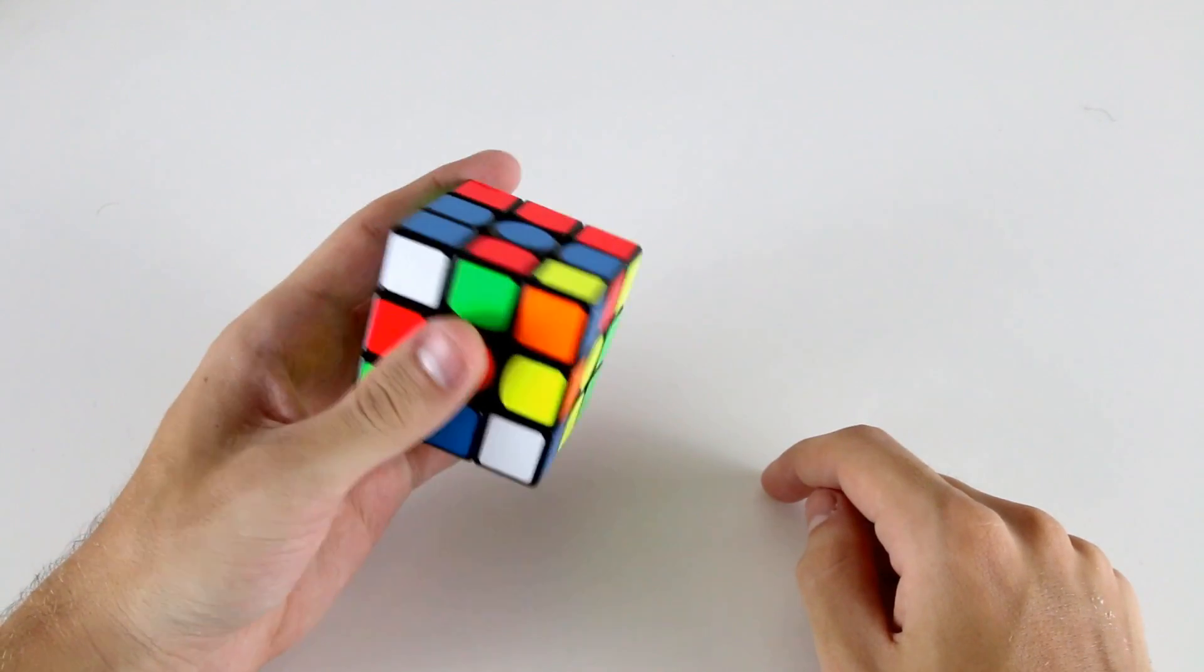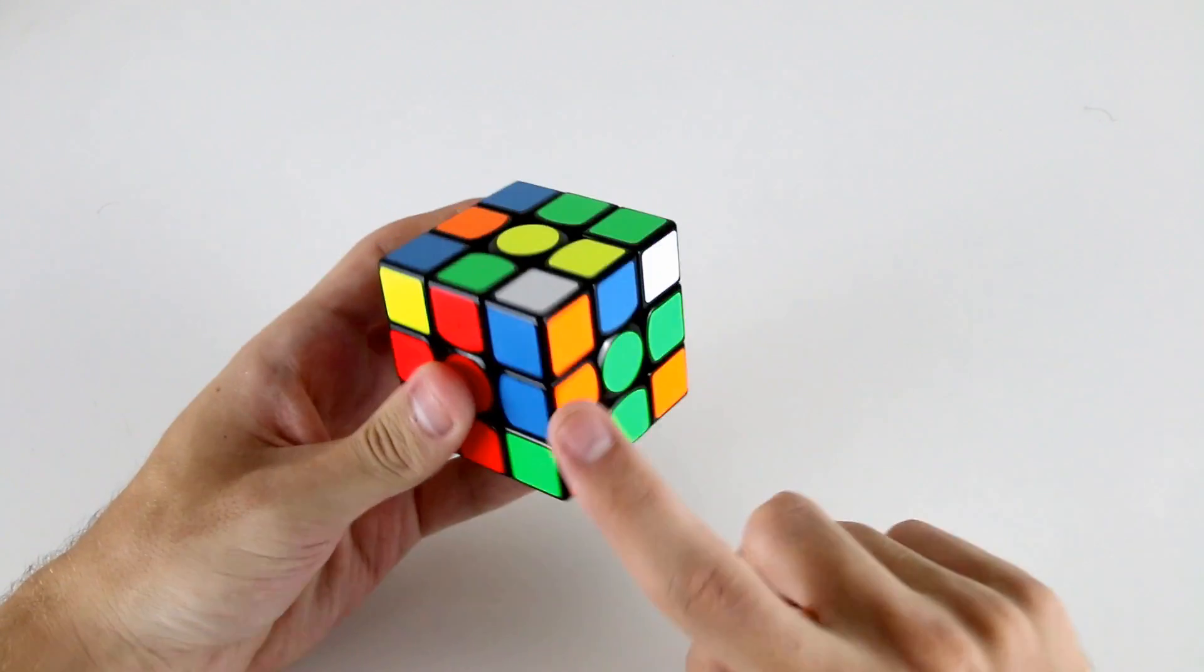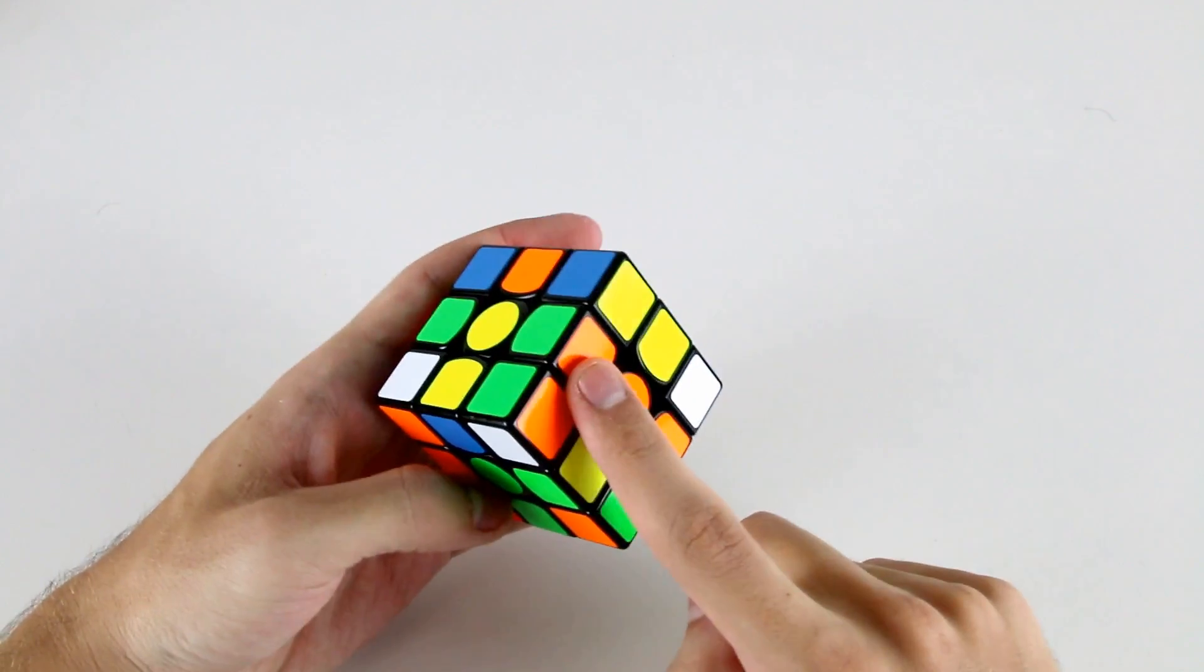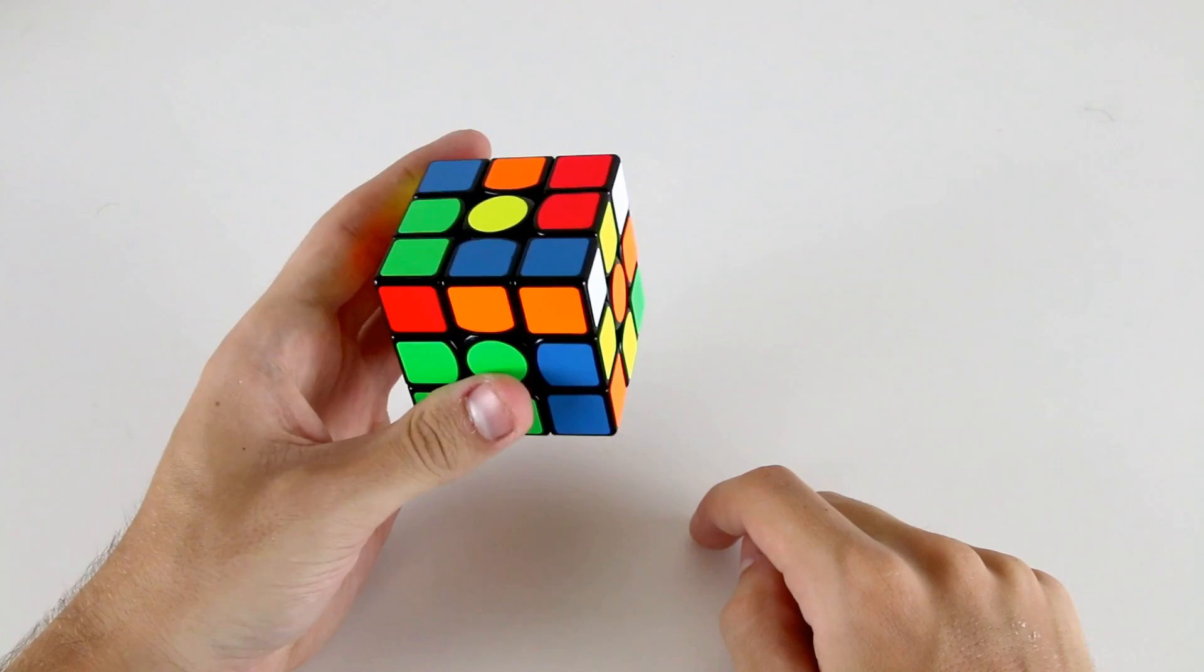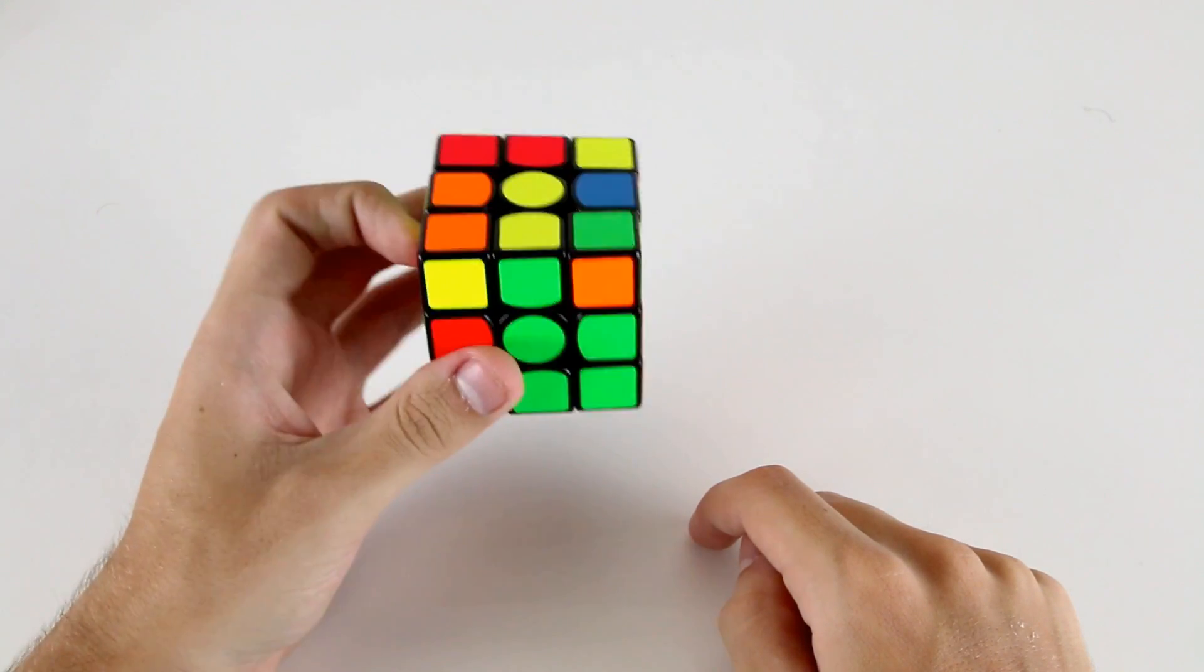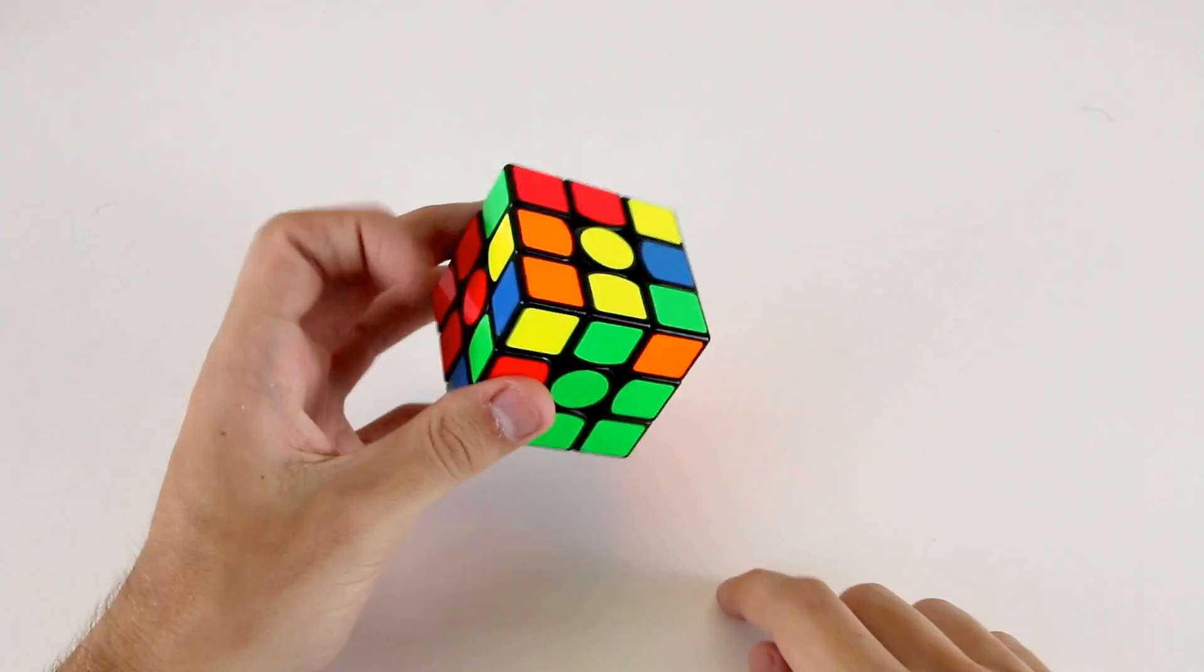Okay, so we've got this f2l pair first. Then I see these, but I also see these. So I can do something like r prime f u prime r f prime to insert them both at the same time.